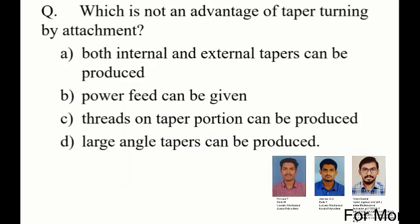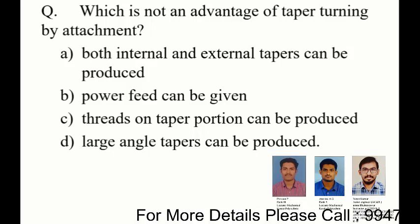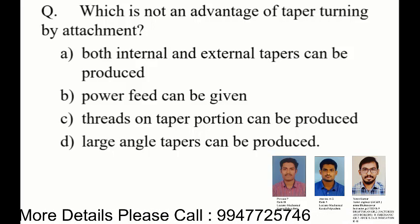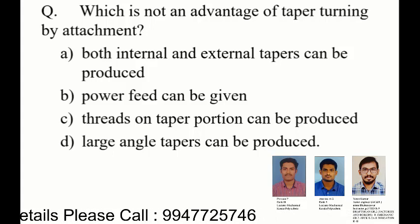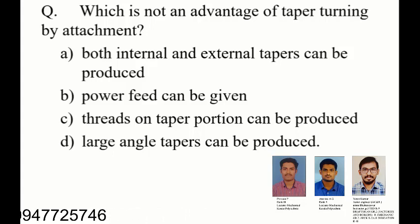Question 5: Which of the following is NOT an advantage of taper turning by attachment? Option A - both internal and external taper can be produced. Option B - power feed can be given. Option C - thread on taper portion can be produced. Option D - large angle taper can be produced. There are 4 methods for taper turning: form tool method, compound rest method, tailstock set-over method, and the taper turning attachment method.